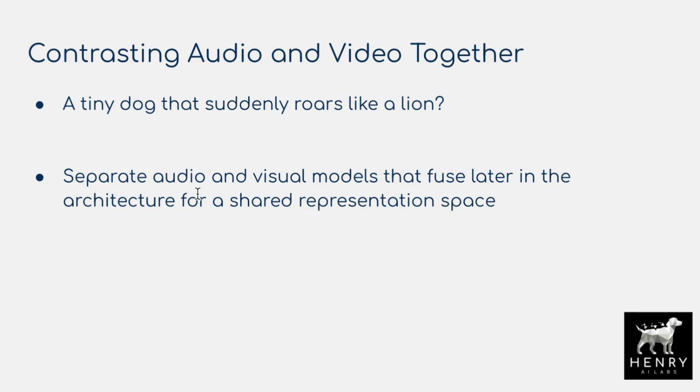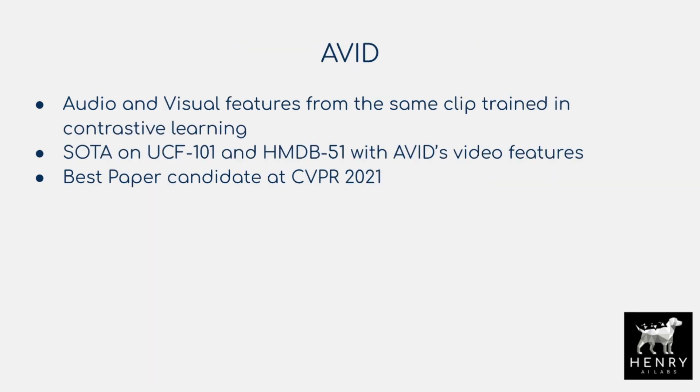The idea they propose is separate audio and visual models that use a late fusion technique for a shared representation space. A one-dimensional convolution model processes the audio data, and something like the TimeSformer or an image frame encoder processes the video data. Each goes through roughly 20 layers of deep neural network processing, and then the final output representation vectors are contrasted using a contrastive learning objective. They explore two different algorithms for structuring this contrastive learning between audio and visual features.